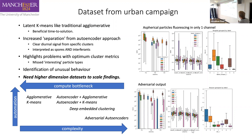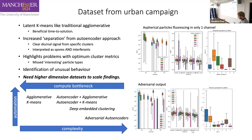Looking at what we've actually done so far: latent k-means gave us results very similar to traditional agglomerative clustering, which in itself was quite significant, because the time to solution was substantially decreased using the much quicker k-means method. We also saw increased separation from the autoencoder approach — clear diurnal patterns in some of the data which we interpret as potentially spores or interference. This highlights a problem with optimum cluster metrics: with k-means or agglomerative clustering you have to define the number of clusters, but with adversarial autoencoding you don't — it determines the optimal number on its own.